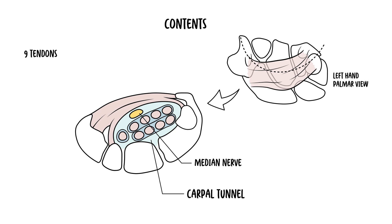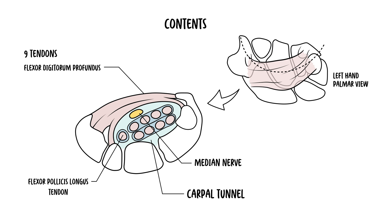The tendons include the flexor pollicis longus tendon, four tendons of the flexor digitorum profundus, and four tendons of the flexor digitorum superficialis. All these tendons are essentially your flexors — they help make a fist. Notably, the flexor carpi radialis tendon, often mistaken to be within the tunnel, actually lies outside beneath the flexor retinaculum.